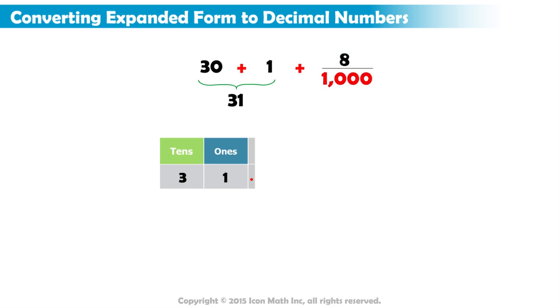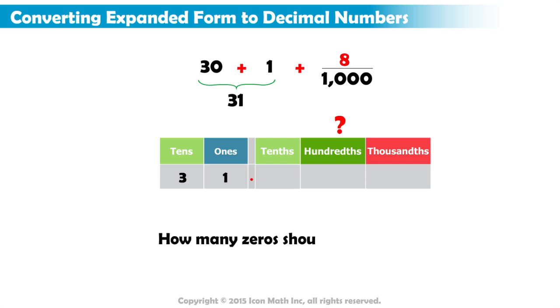Since the denominator of the fraction is 1000, which is 10 to the power 3, we need 3 decimal places. But in which decimal place do we write 8, the numerator? Just ask yourself, how many zero digits do I need after the decimal point to get a total of 3 digits, if I already have 1 digit?